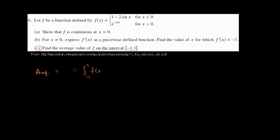This is from negative 1 to 1. The integral from negative 1 to 1 of f(x) dx, divided by our change in x. Our change in x is 1 minus negative 1, so this is going to be equal to 1 half times the integral.